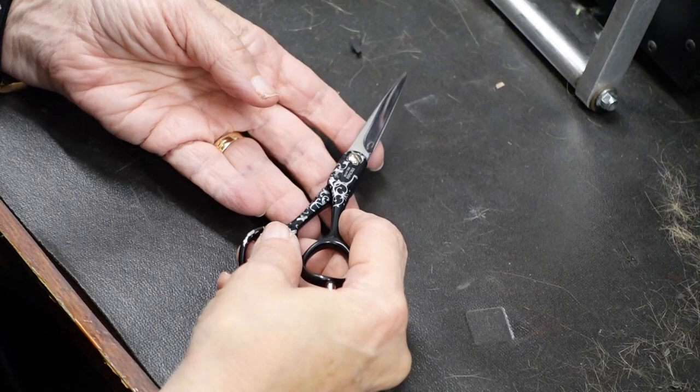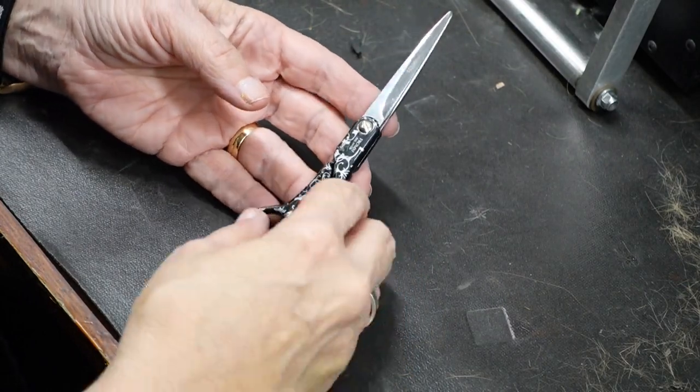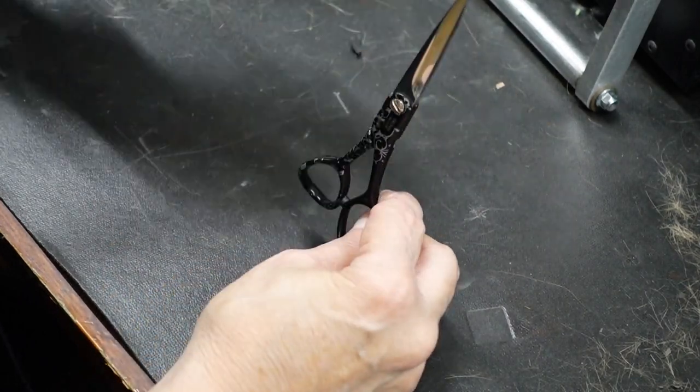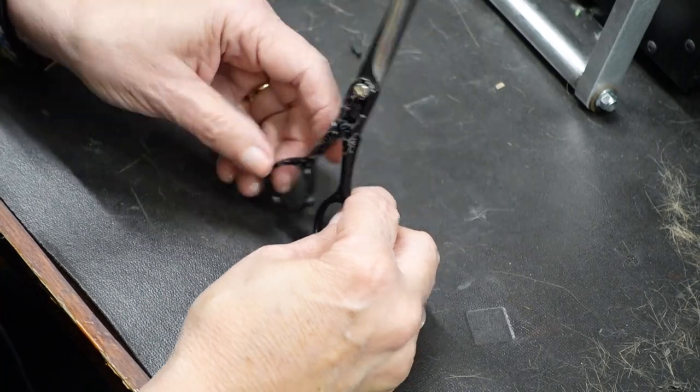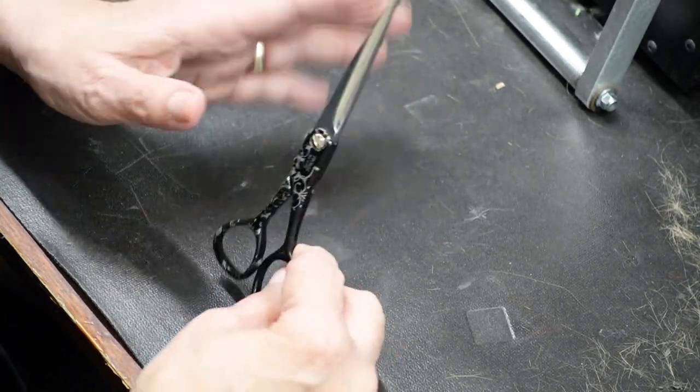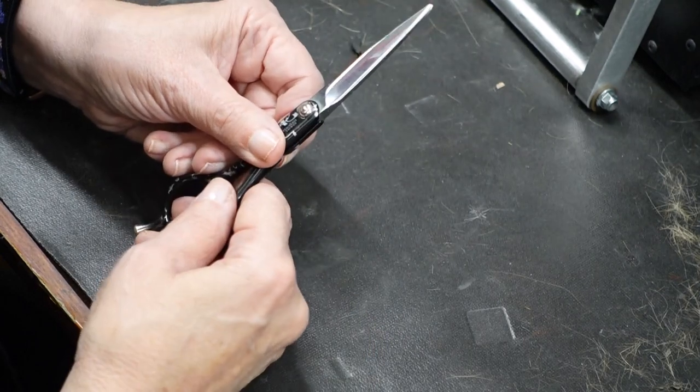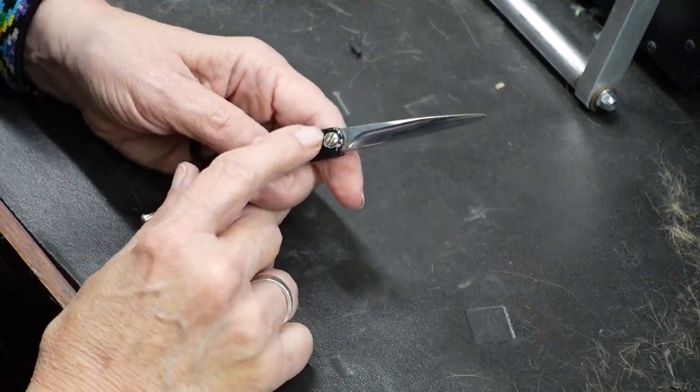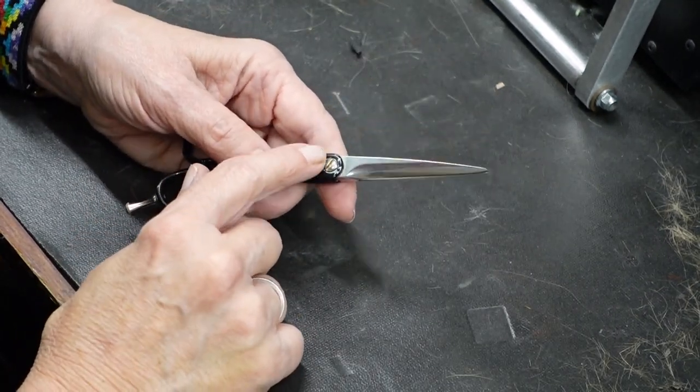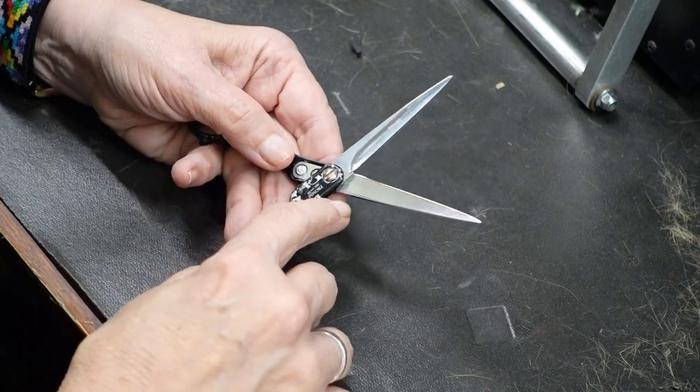But less is more. When is less more? Well, this is a perfect example. So let's take a look at these shears. What am I seeing? First of all, they are way too loose. It may be just tightening them is all that it's going to need.